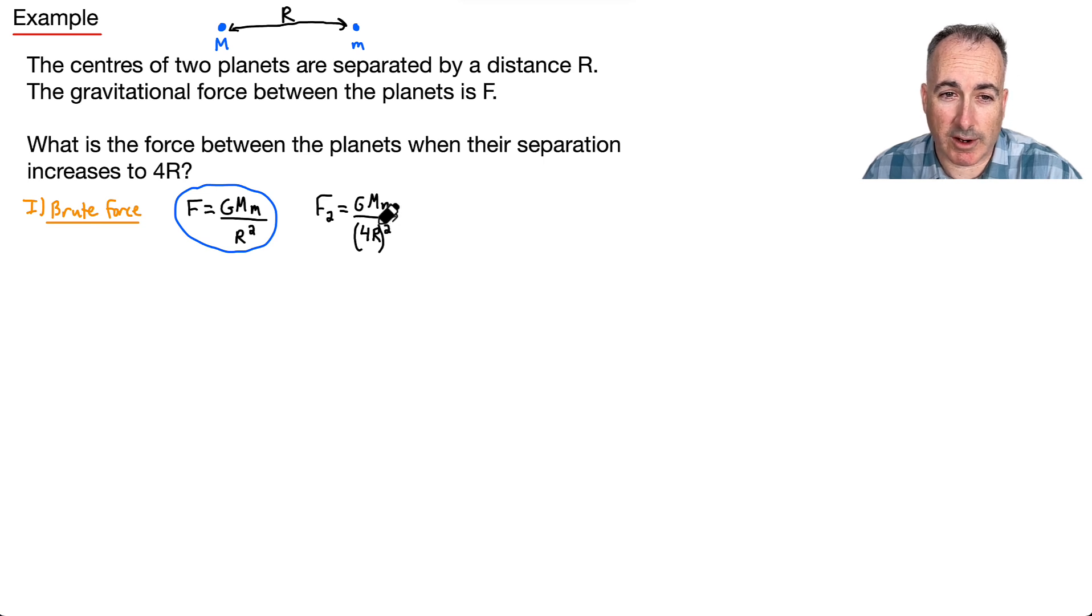It's not 4r squared—it's 4r all that squared. In other words, you have to do 4 squared r squared, so that's really important not to forget. If we do this, let's see: GMM over 4 squared, which is 16 times r squared.